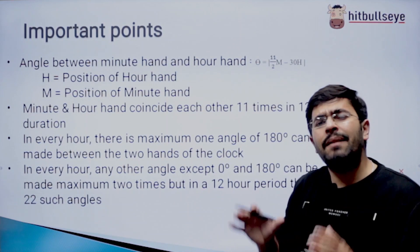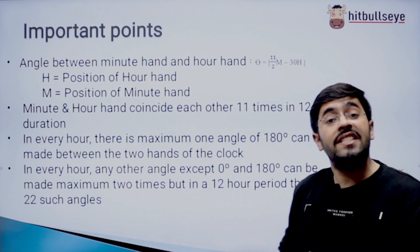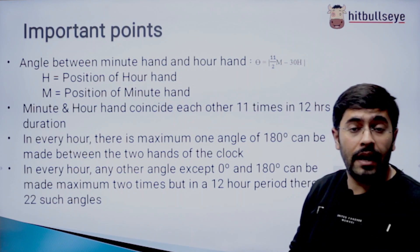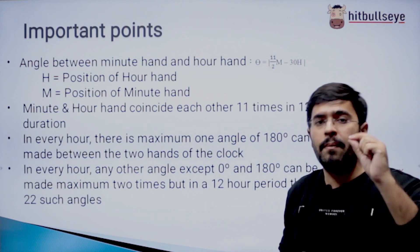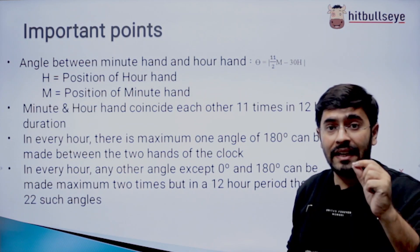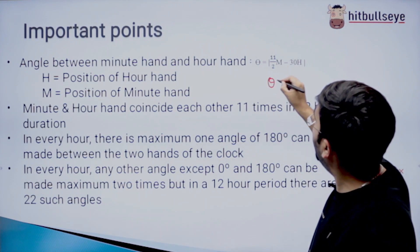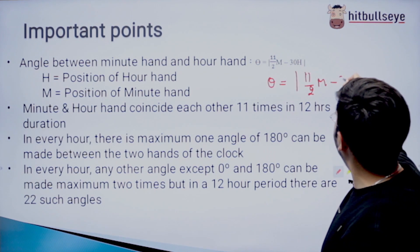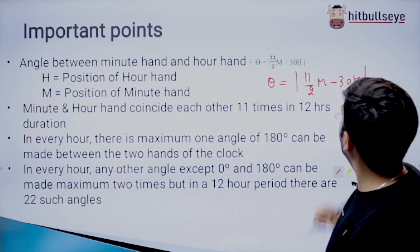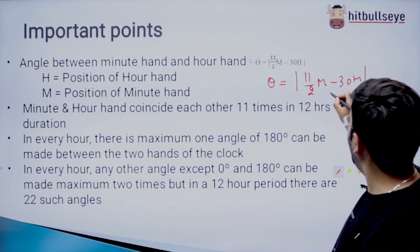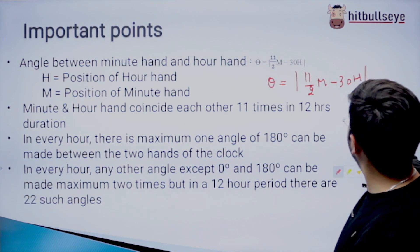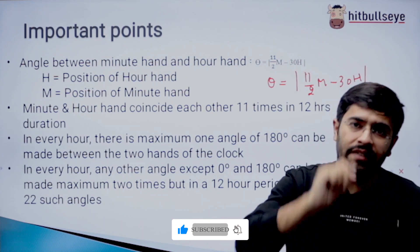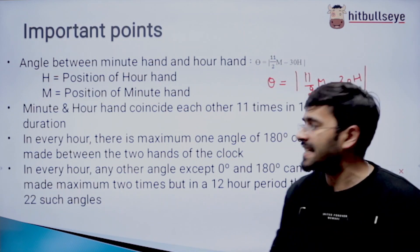And now we will talk about some general points that come under this topic. Like the first question which usually comes to all students, that is the angle between the minute hand and the hour hand. This is a very important formula and I would suggest all my students to remember this formula correctly and write it down. So the angle is theta equals mod of 11 by 2M minus 30H mod close. Where M refers to the position of the minute hand and H refers to the position of the hour hand. And the mod here refers to, that whatever value comes, you have to accept only its positive part.